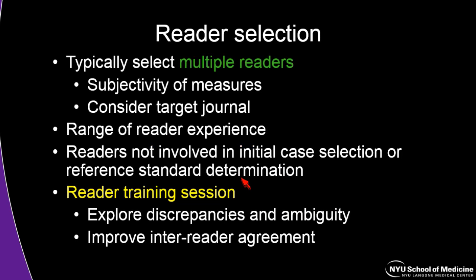In terms of picking your readers, you'll typically have multiple readers, especially for things with subjective measures. More competitive journals usually want higher numbers of readers — three or more. You want readers with a range of experience, both junior and senior, to show observations are robust across experience levels. Those readers should not be involved in the initial case selection or reference determination to avoid bias. A reader training session where readers review cases not in the study, then meet and discuss discrepancies, can really help improve inter-reader agreement.